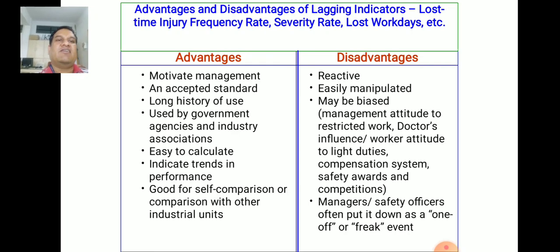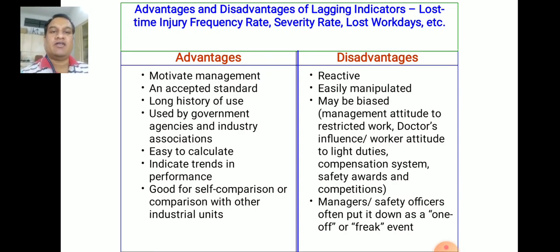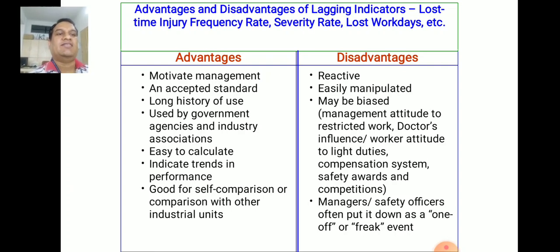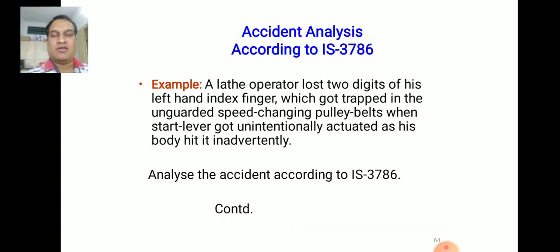Advantages of lagging indicators include: motivate management, accepted standards, long history of use, used by government agencies and industry associations, easy to calculate, indicate trends, and good for self-comparison. Disadvantages include: reactive, easily manipulated, may be biased, depend on management attitude, influenced by restricted work or doctor's influence, work attitude, compensation systems, and safety awards competitions. Managers and safety officers often put accidents down as one-off or freak events.